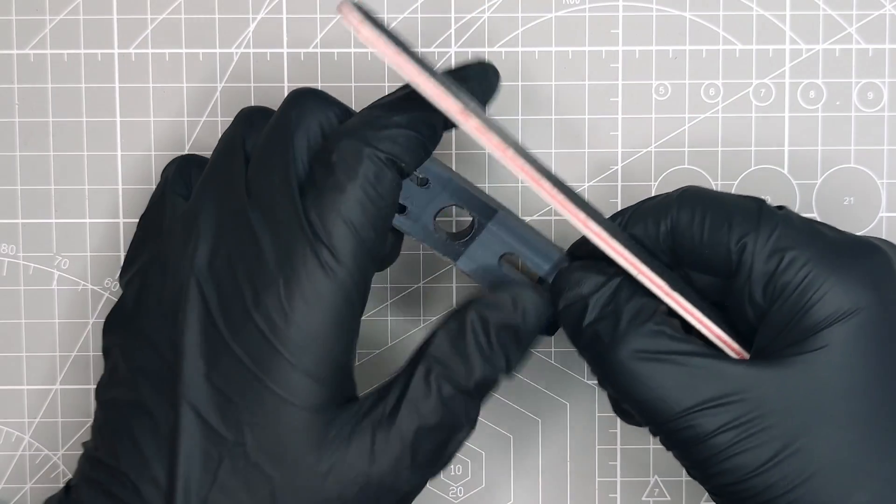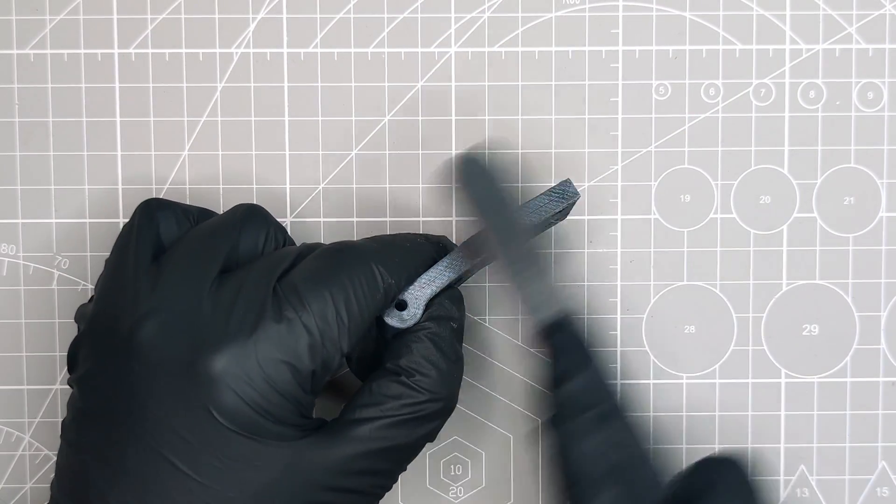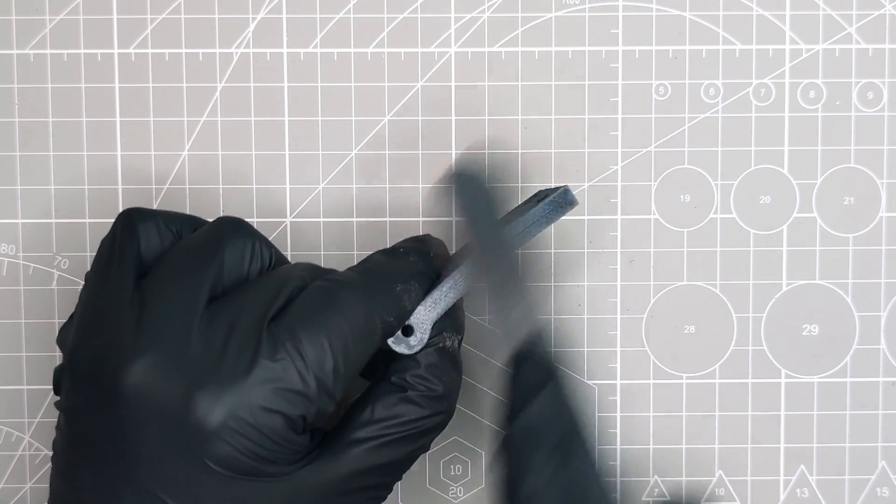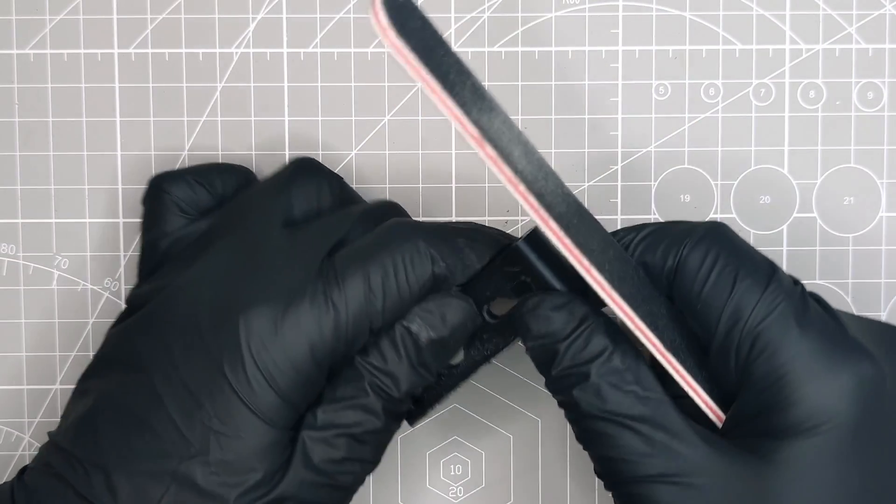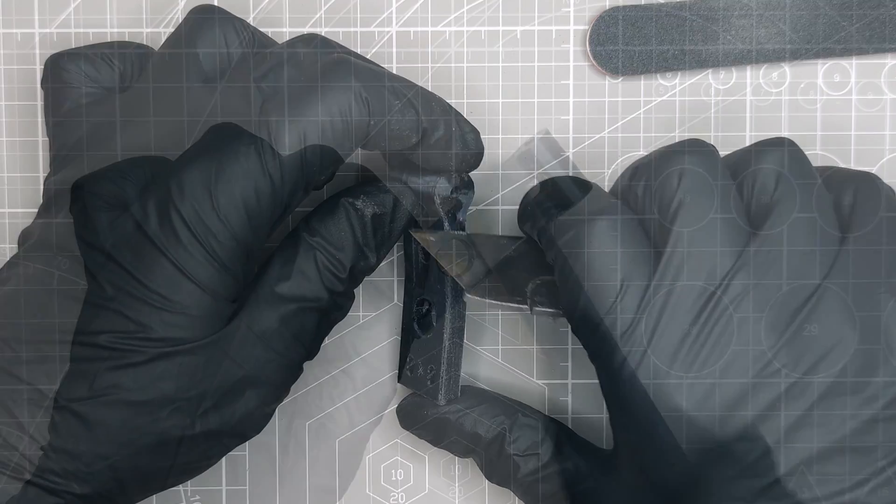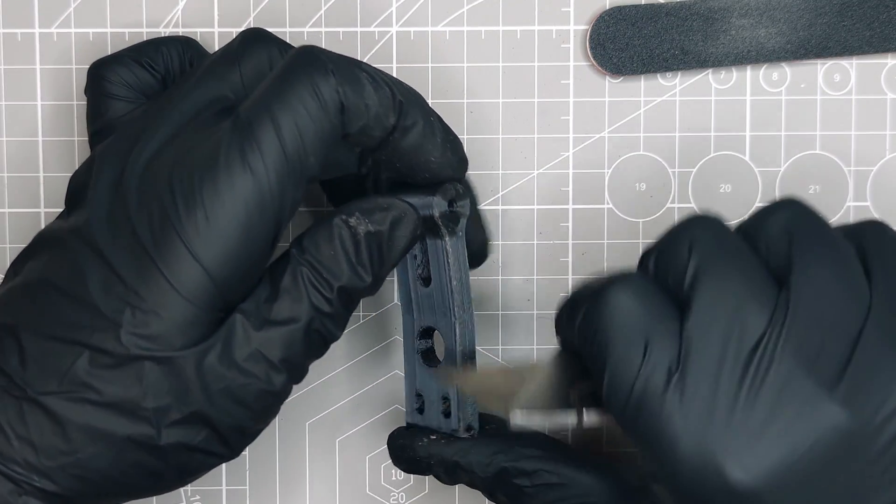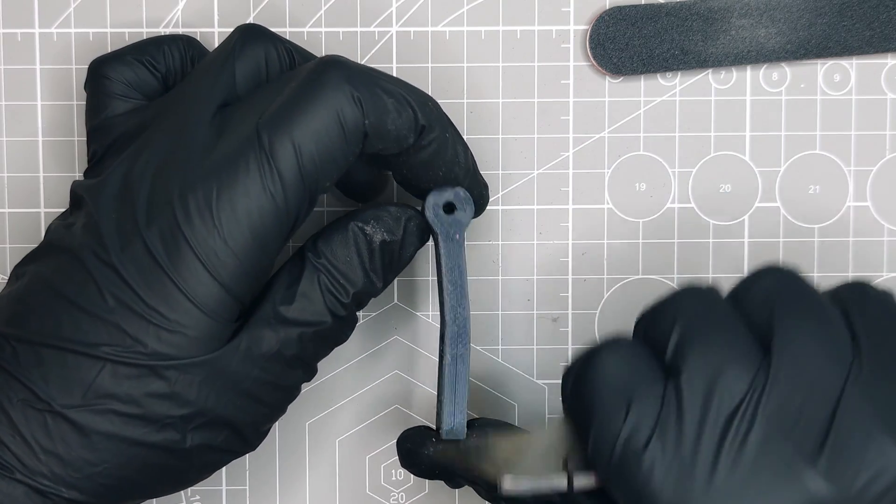For the lever, I will quickly clean up the elephant's foot that formed on the bottom. I first use the file to remove the bulk of the material. And then, I scrape the edge with a sharp blade. You can also use a deburring tool for this kind of simple cleanup.